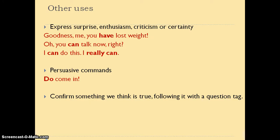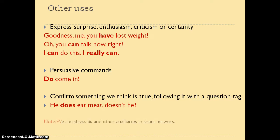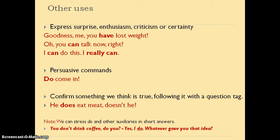We can also confirm with emphasis — confirming something we think is true — and it's usually followed by a question tag. Picture this situation: your daughter's new boyfriend is coming for dinner and you want to make sure about his tastes so you don't ruin dinner. So you might ask, 'He does eat meat, doesn't he?' — just to make sure he does and that you're not going to serve lamb to a vegan. Note that we can also stress 'do' and other auxiliaries in short answers. 'You don't drink coffee, do you?' 'Oh, yes I do.' You can simply say 'I do. What gave you that idea?'